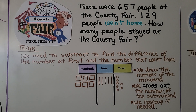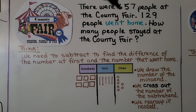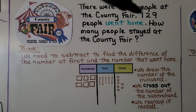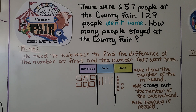Let's try solving some word problems. This one says there were 657 people at the county fair. 129 people went home. How many people stayed at the county fair? We need to subtract to find the difference between the number at first and the number that went home — 657 minus 129. The first thing we do is draw the minuend: 6 hundreds, 5 tens, 7 ones.